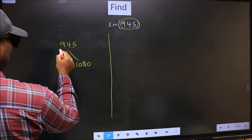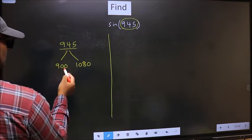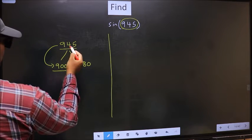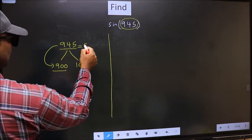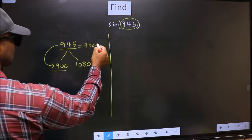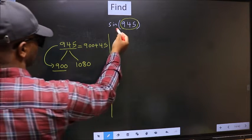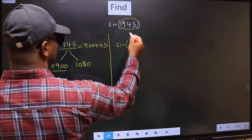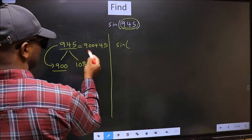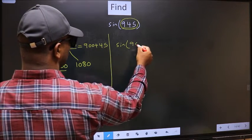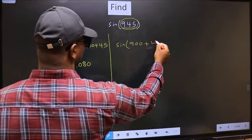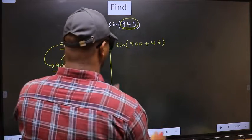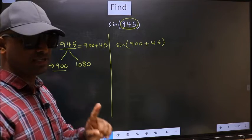Next. Now, 945 is close to which number? This is close to 900. So 945 now should be written as 900+45. So this will become sin(900+45). In place of 945, now we should write 900+45. This is your step 1.